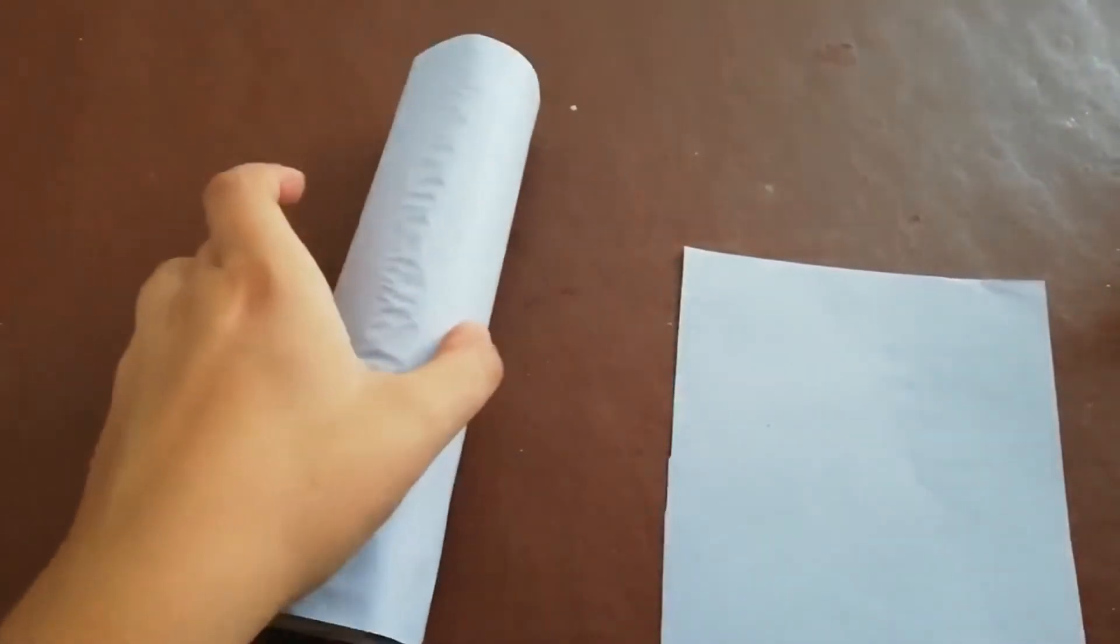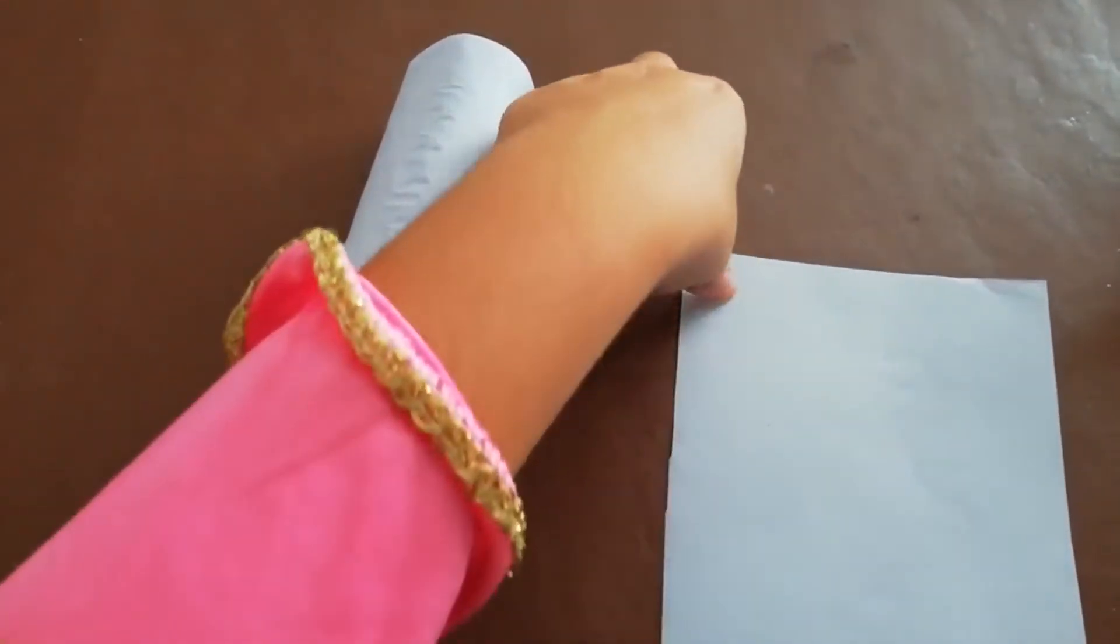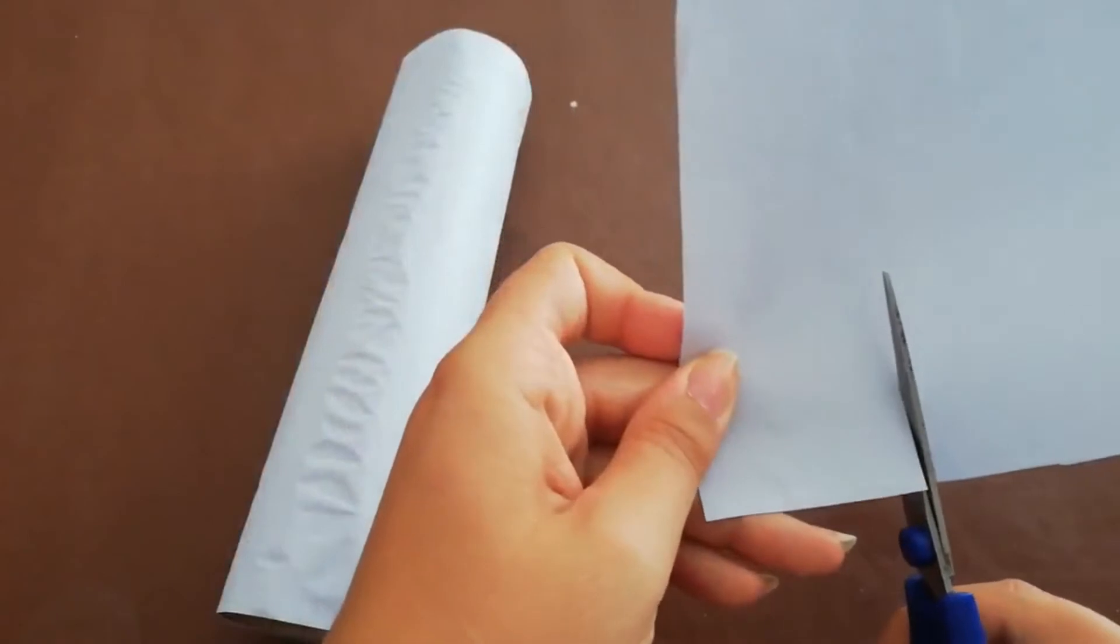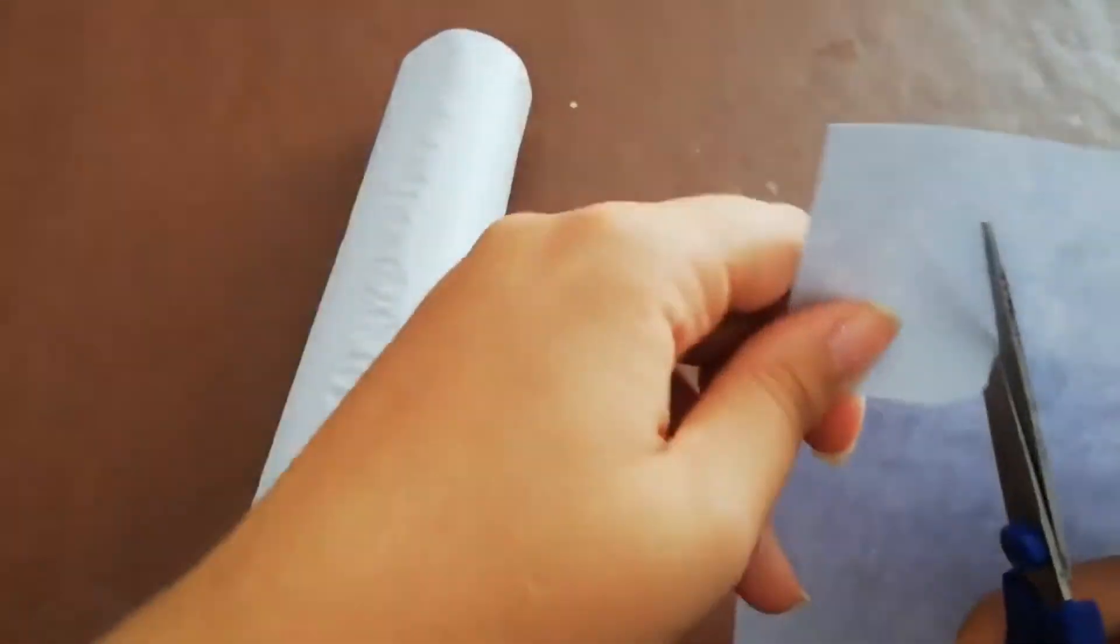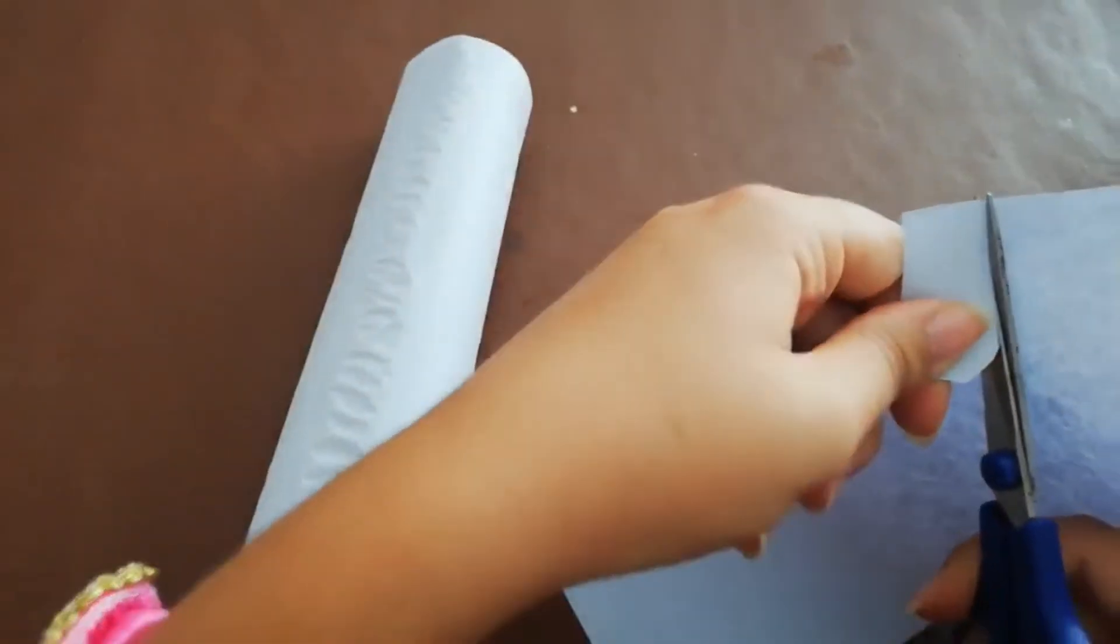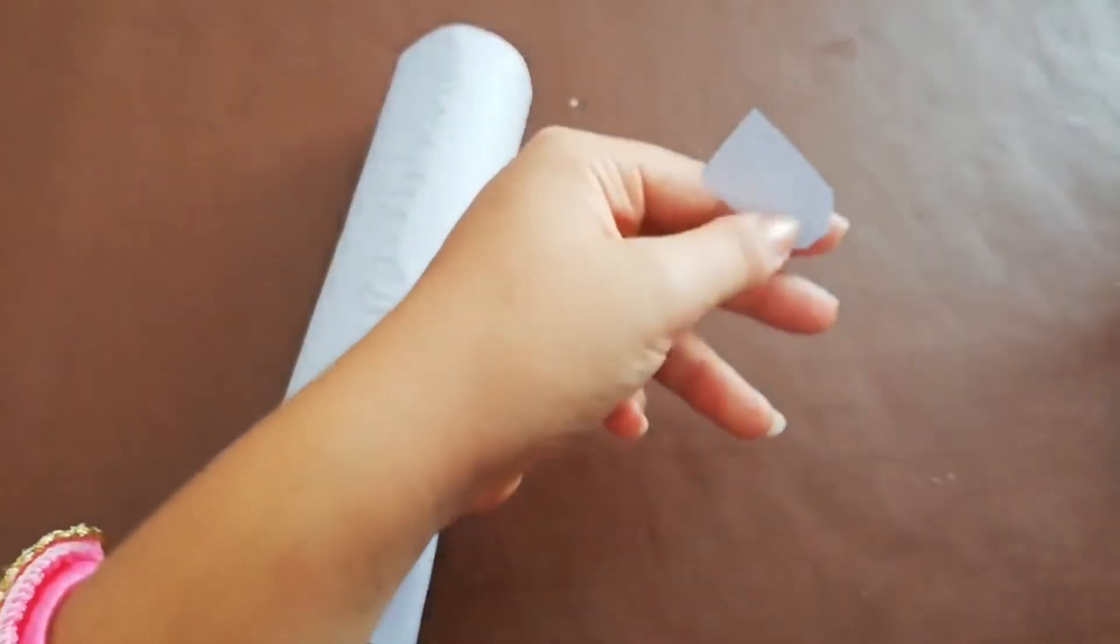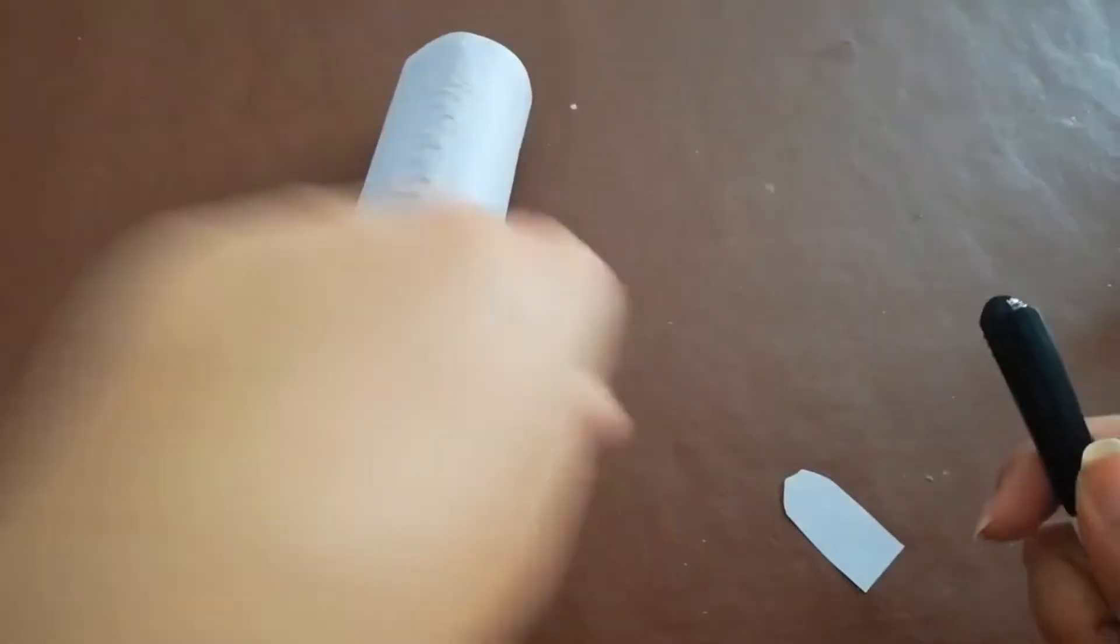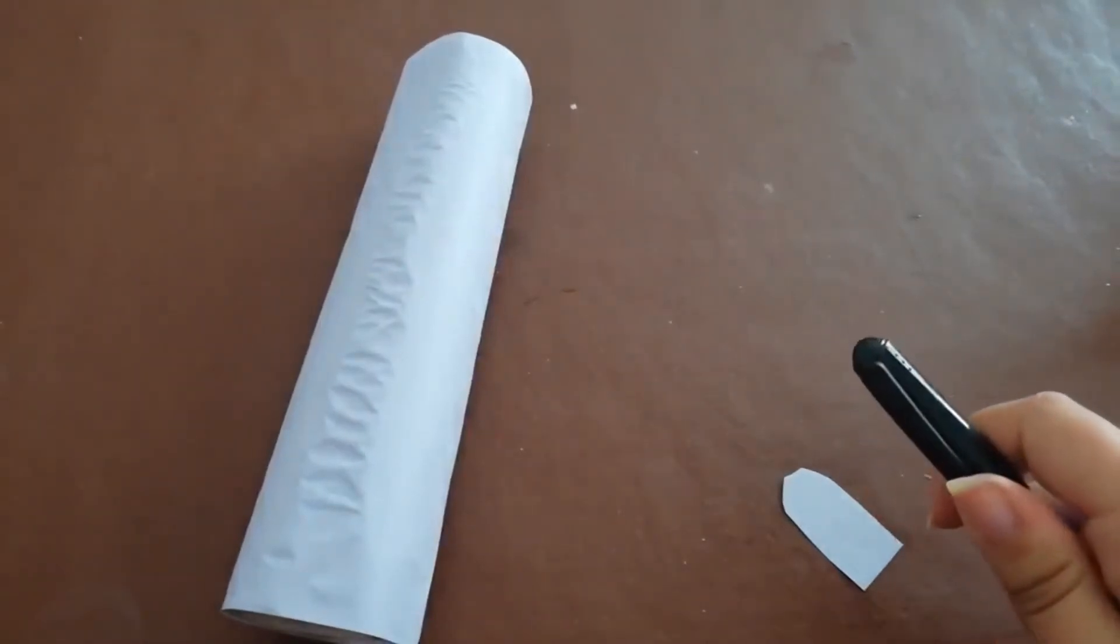And then the next step is we're going to do our window. To do that, we're going to be taking the bit we just cut off, and we're going to be cutting out a small oval shape for the window. So, just like that, and I'm going to be coloring it using my black pen.